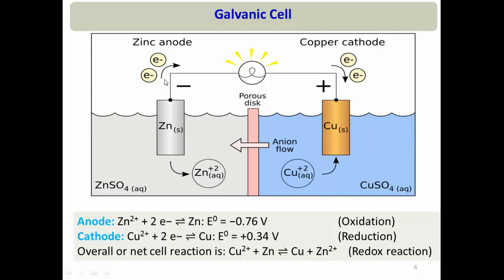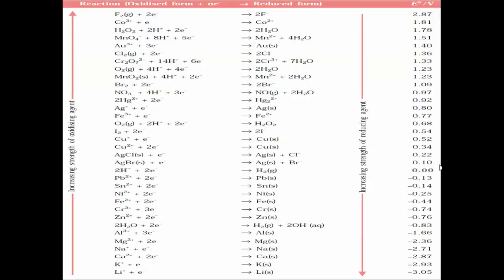So zinc acts as the anode (negatively charged) and copper as the cathode (positively charged). As the reaction proceeds, zinc converts to Zn²⁺ ions and its thickness decreases — it ultimately corrodes. The material acting as the anode will corrode. Noble metals like silver, gold, and platinum sit at a higher level in the electrochemical series and do not corrode easily, while reactive or base metals at a lower level oxidize readily.